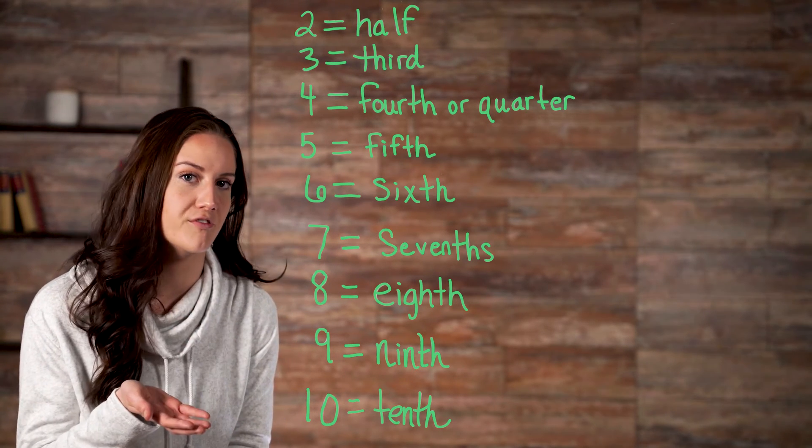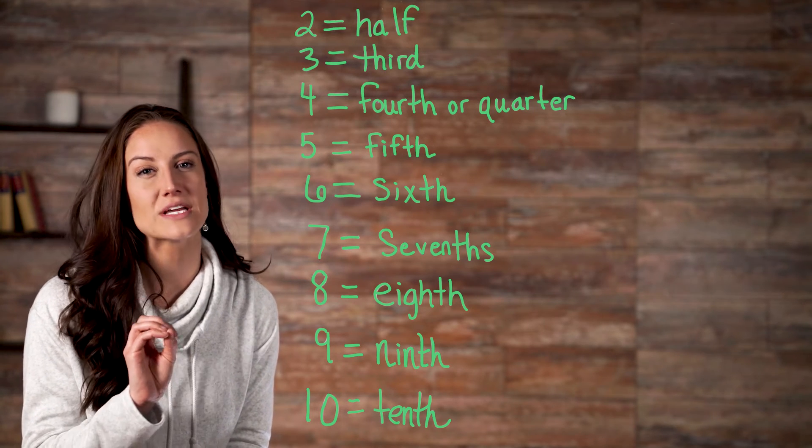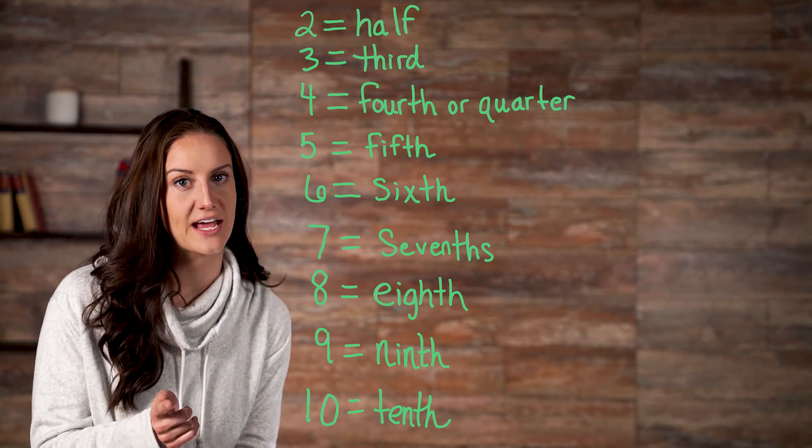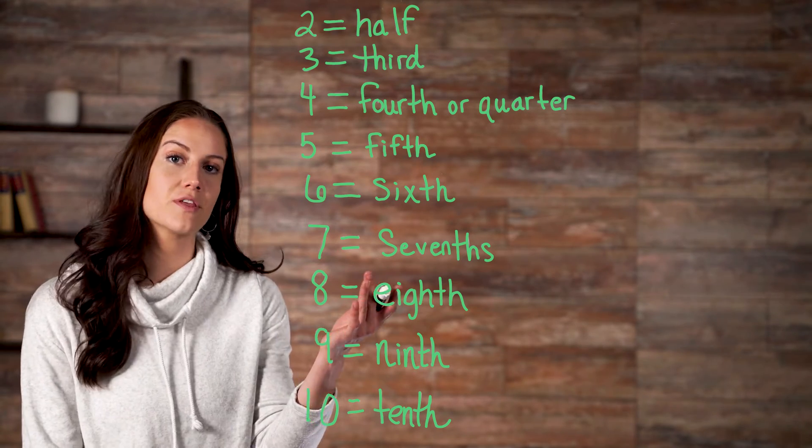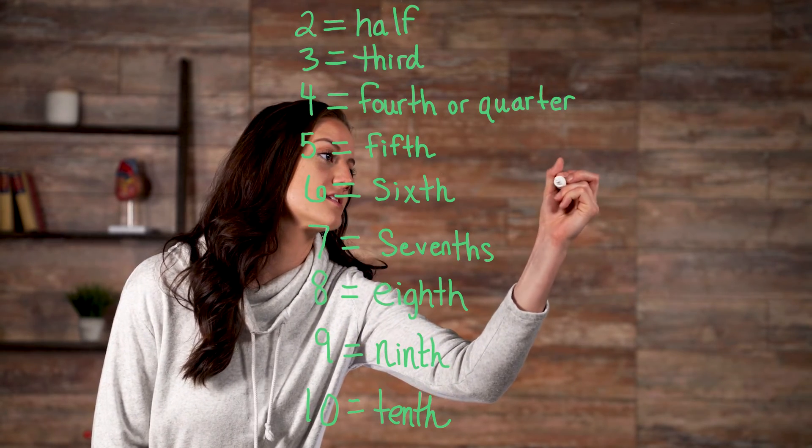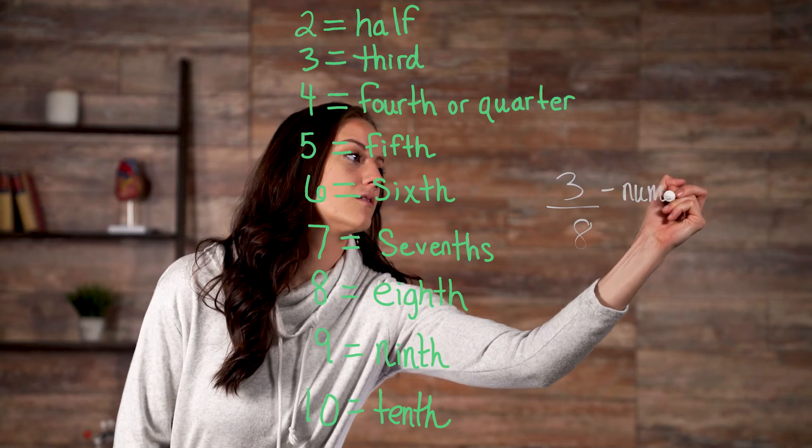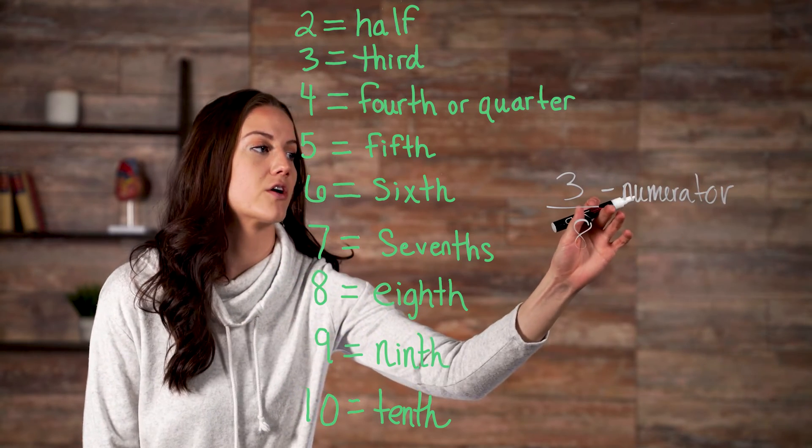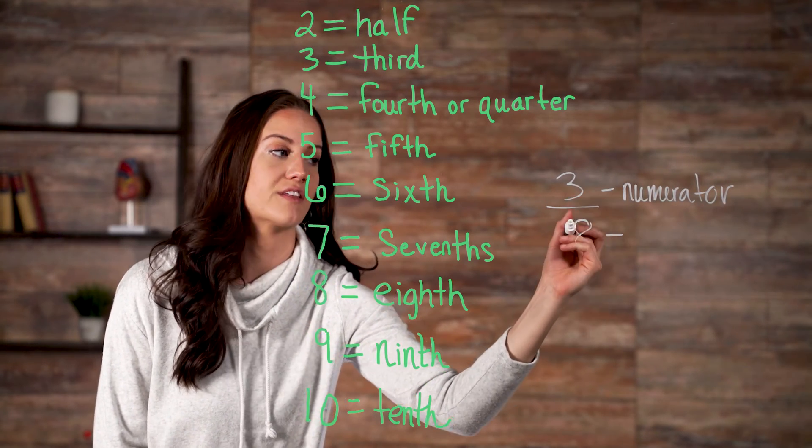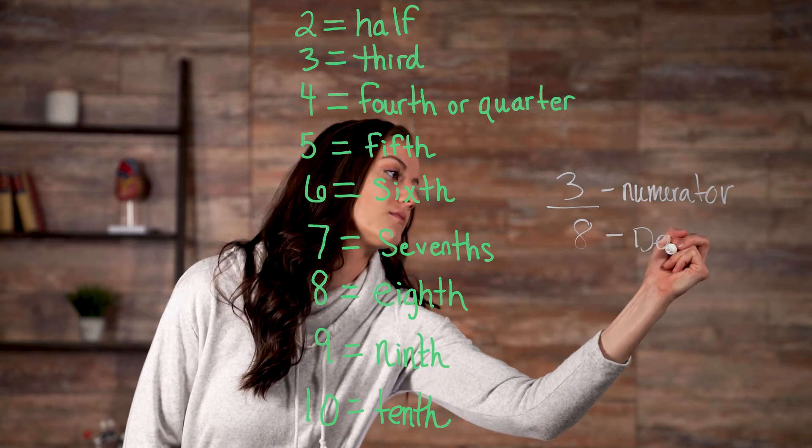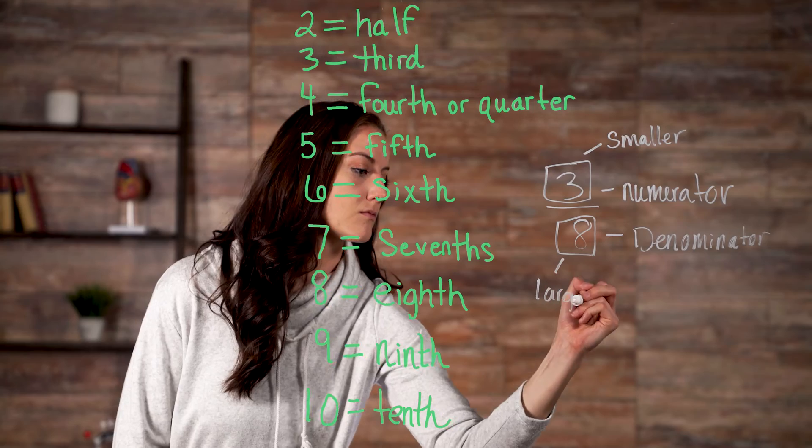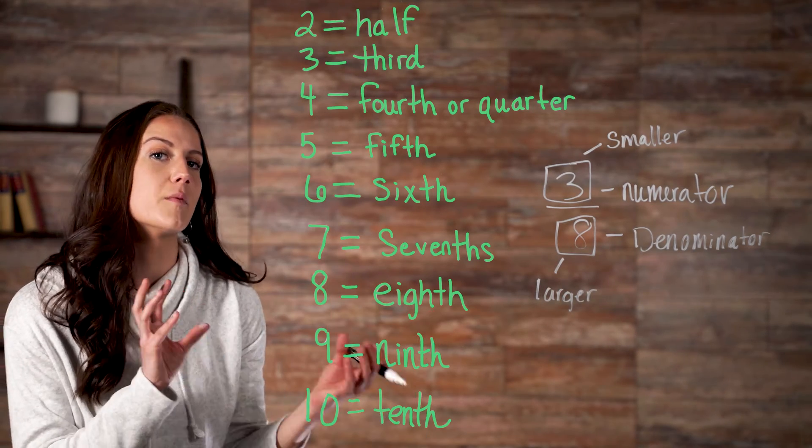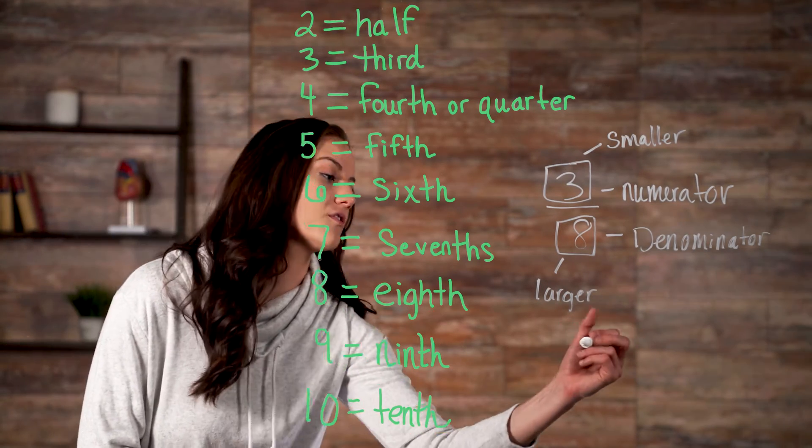First, we have a proper fraction. A proper fraction always has a numerator that is smaller than the denominator. Our example that we used before, three-eighths. So, our numerator, three, is smaller than our denominator, eight. Some other examples of proper fractions include four-fifths.